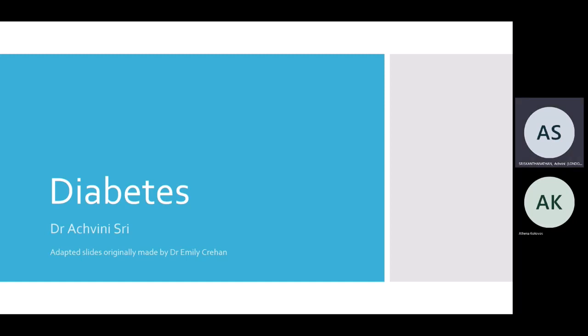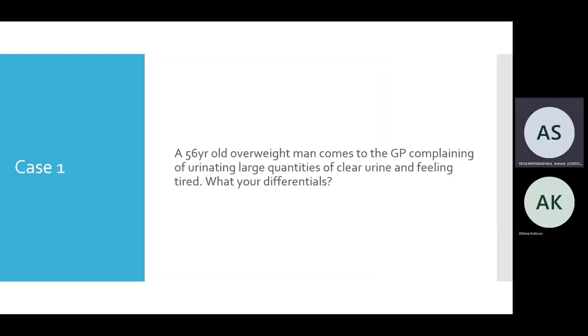The first section is on diabetes. These slides were originally made by Dr Emily, who kindly let me use and adapt them — adjusted slightly according to more recent guidelines with a few add-ons. Our first case: a 56-year-old overweight man comes into the GP complaining of urinating large quantities of clear urine and feeling tired.